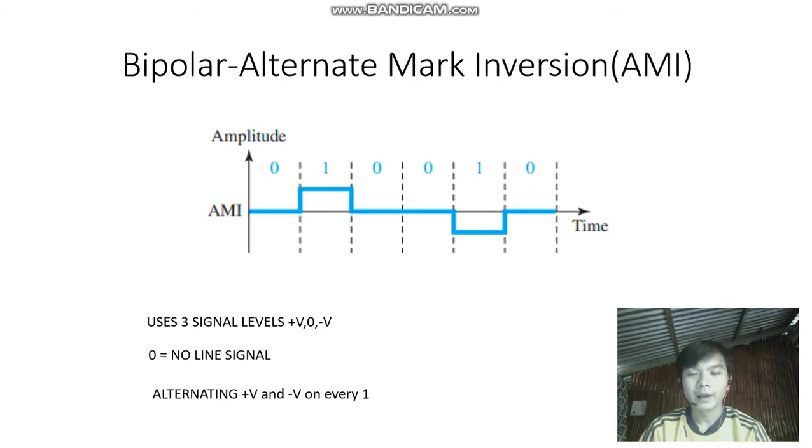So AMI uses three signal levels: the positive volts, the zero, and the negative volts. Zero is a no-line signal. Then, so this is the zero, zero, zero. Then the alternating V or volts and the negative V on everyone.